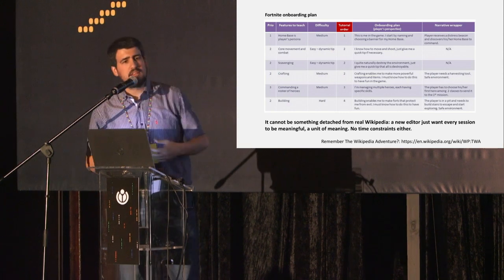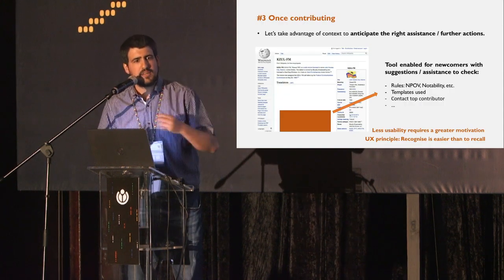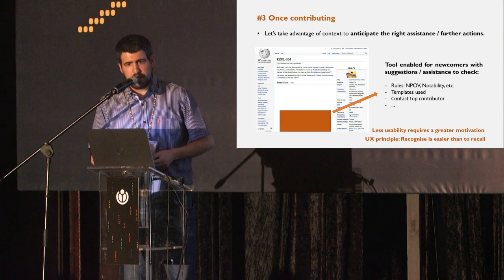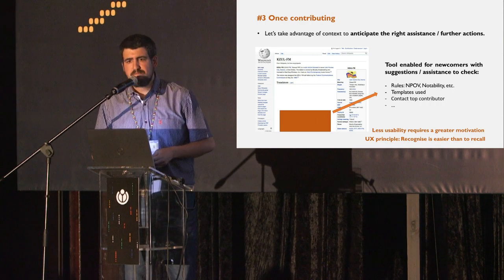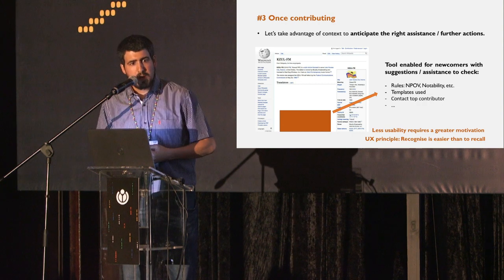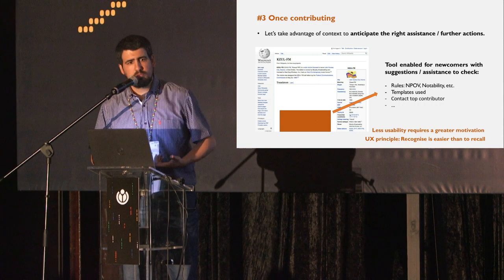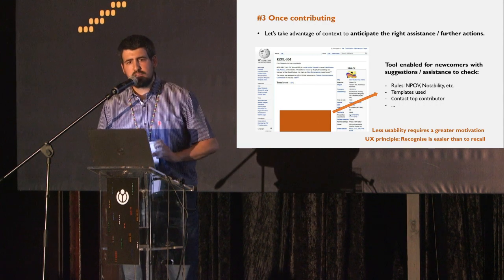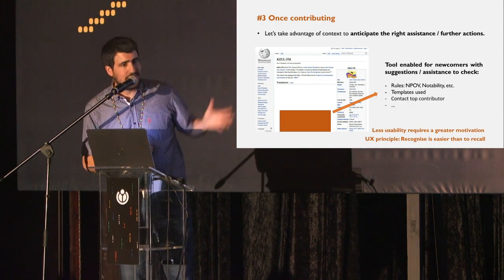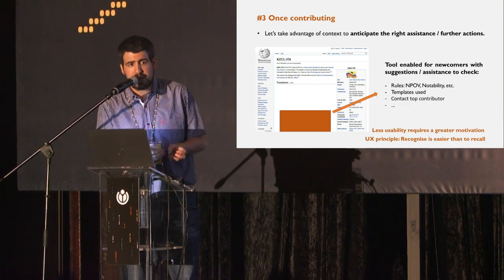Let's say users already learn what they need — whether they are photographers, typographers, translators, or in whichever role — and they want to start contributing. We can be motivated to contribute, but if the system itself facilitates what we need, it's going to be more usable, and therefore motivation doesn't need to be that high. This is why I propose providing assistance and further actions in order to perfect what we are doing.